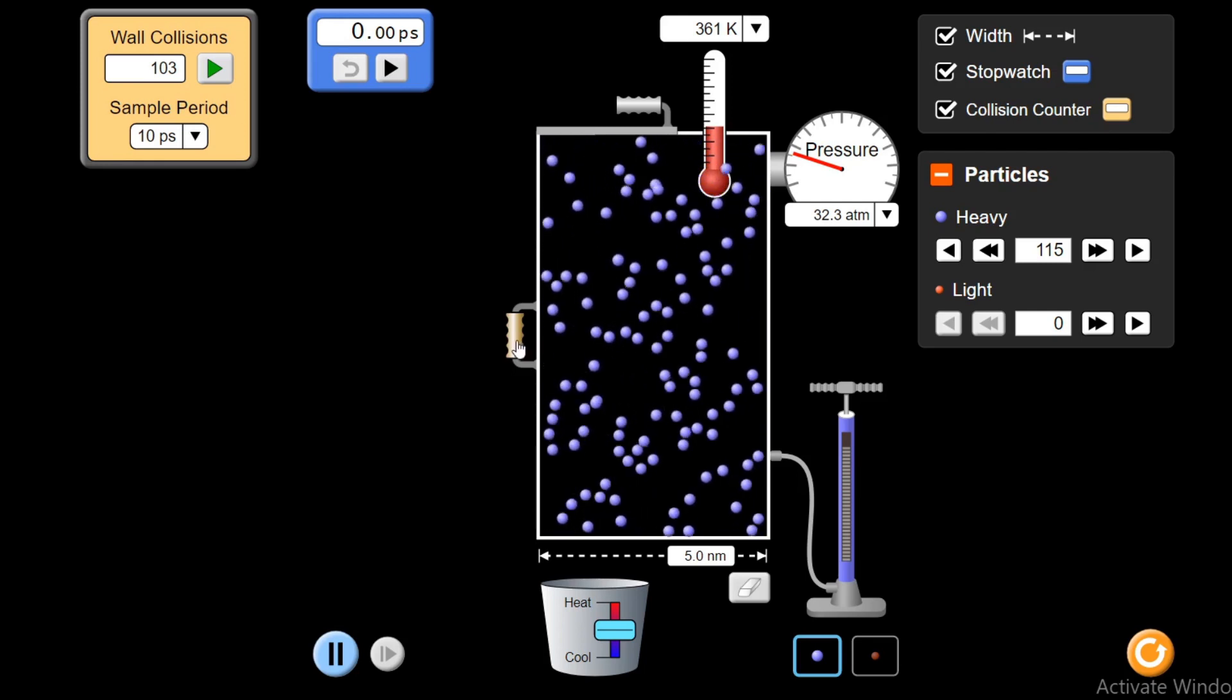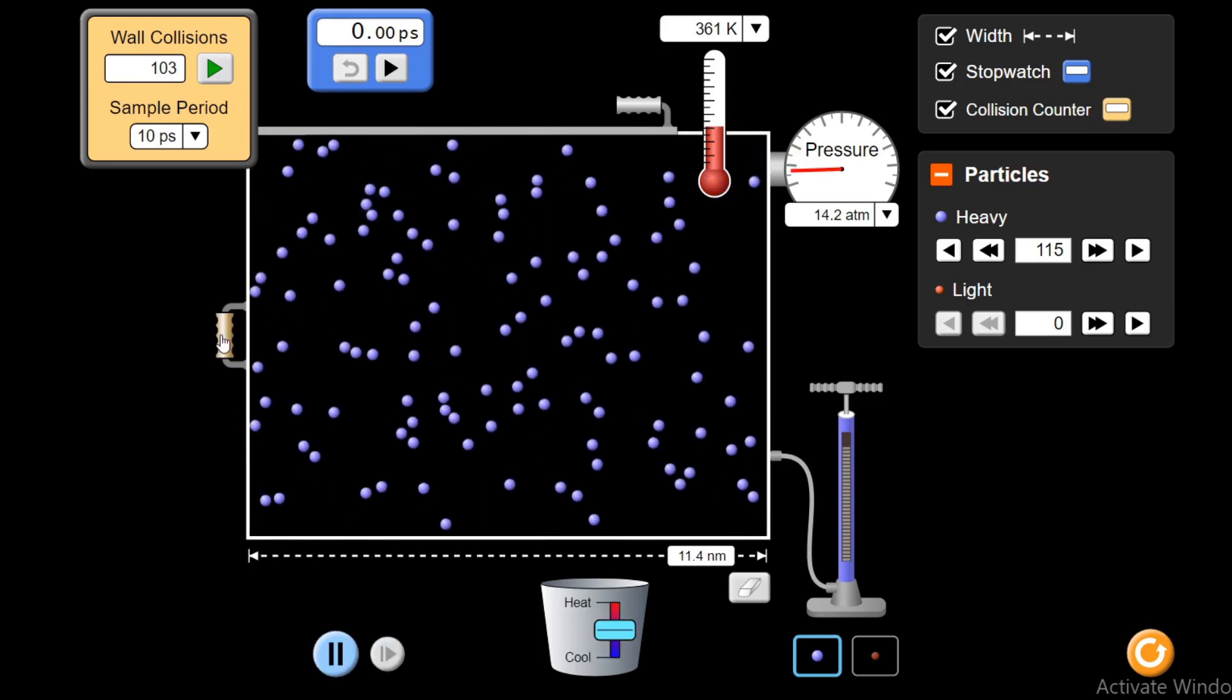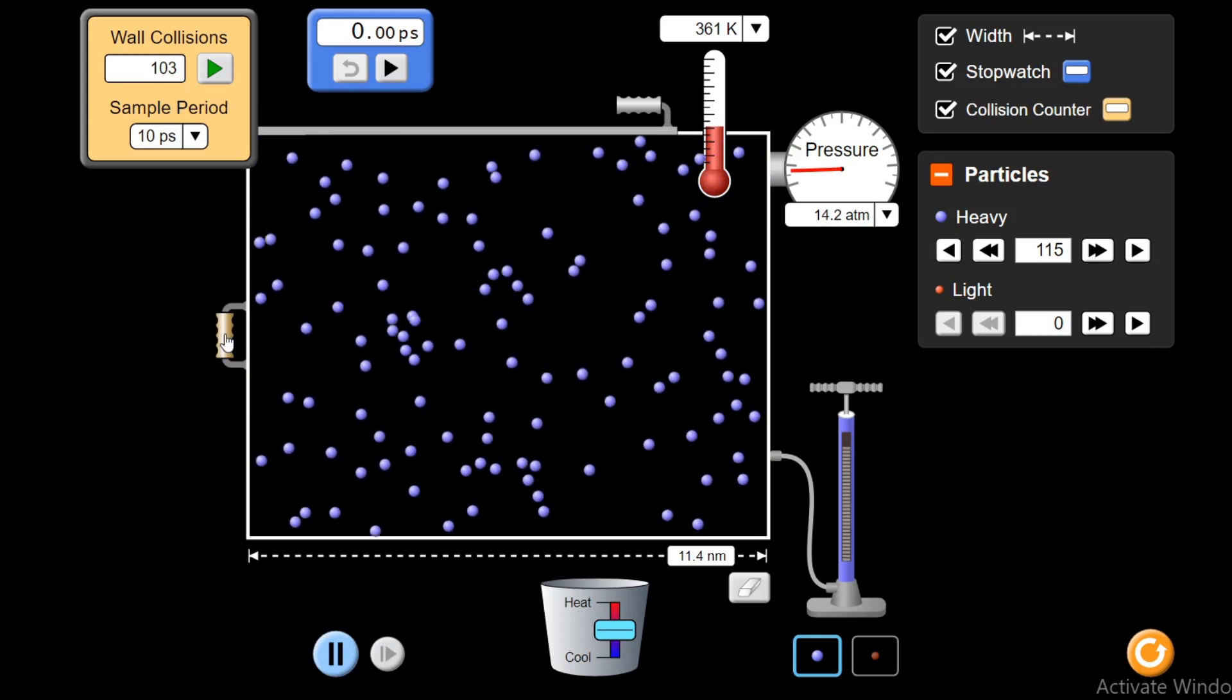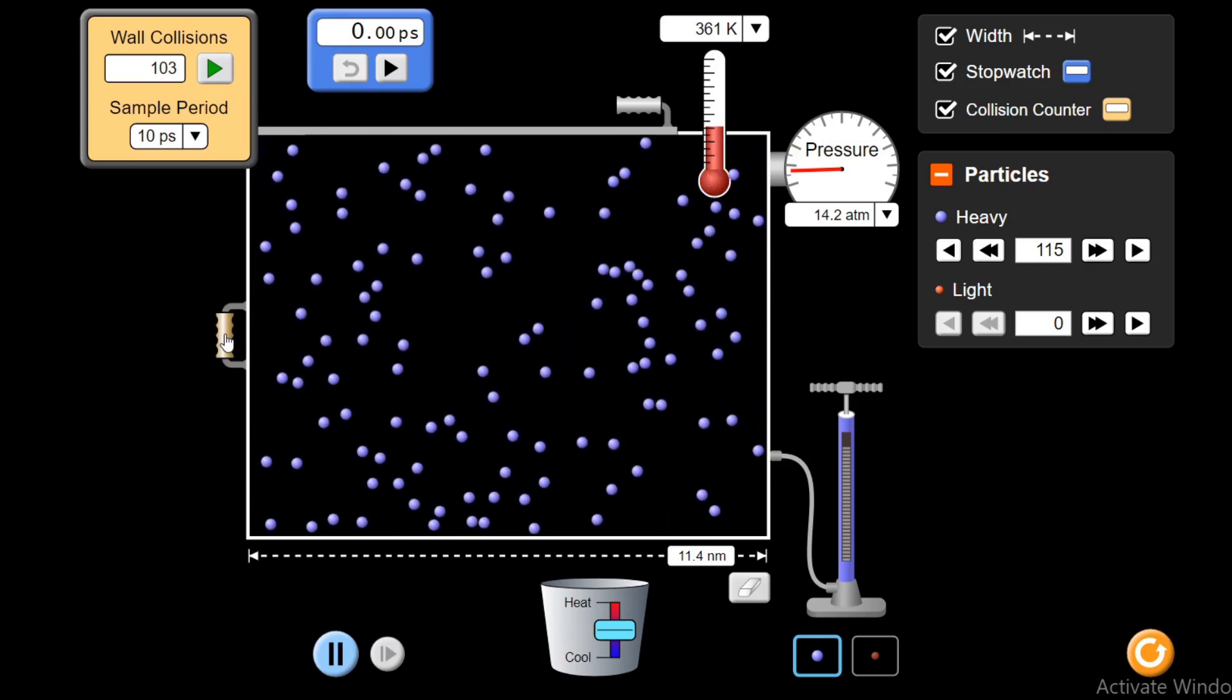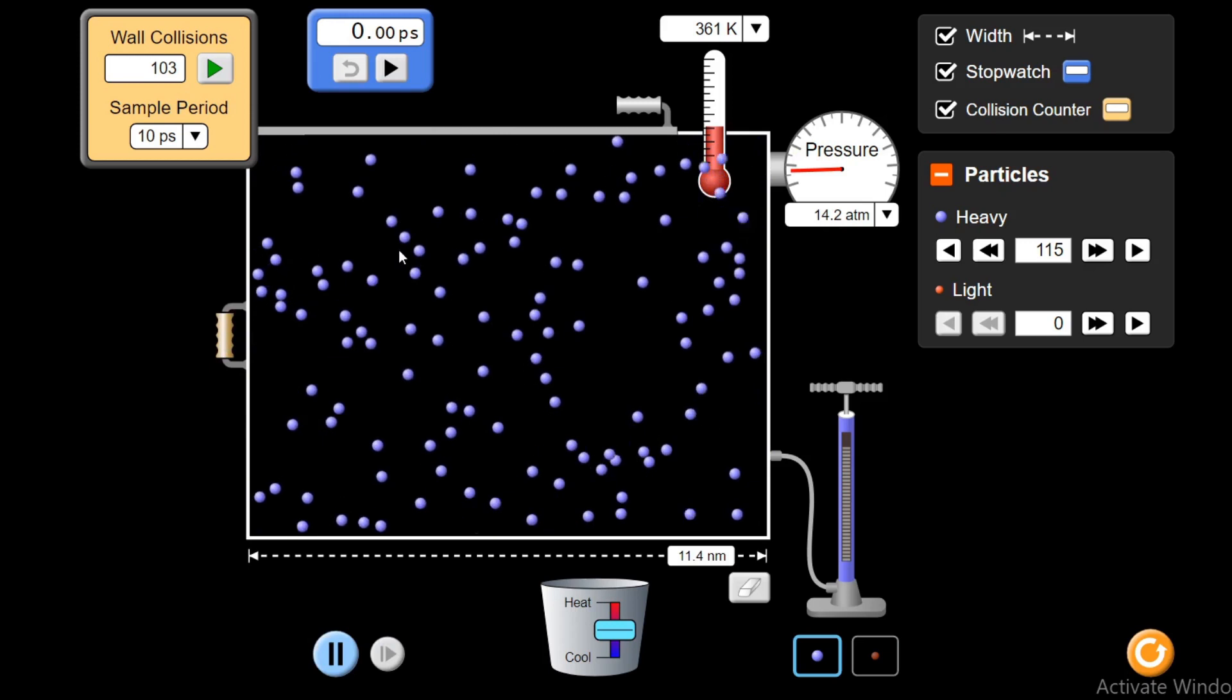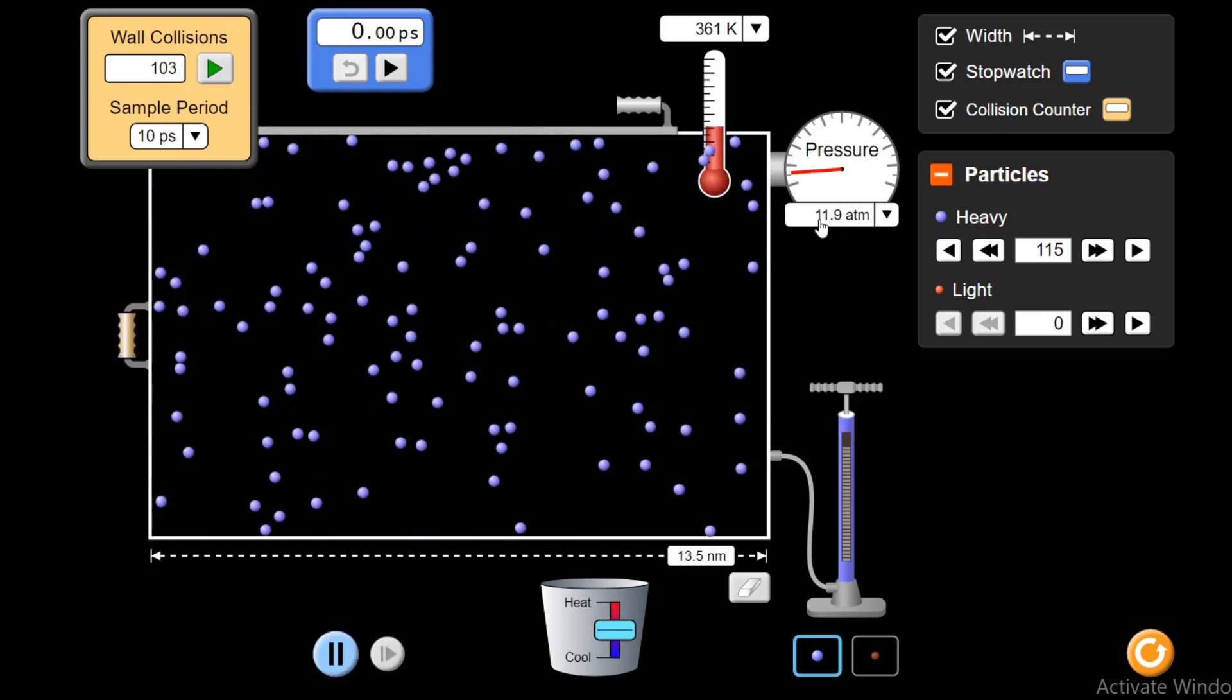If I increase the volume, then they will get more volume. And number of collisions with the walls of the container will reduce. F by A, area has reduced per unit area. They are colliding less frequently. You see, pressure has reduced.